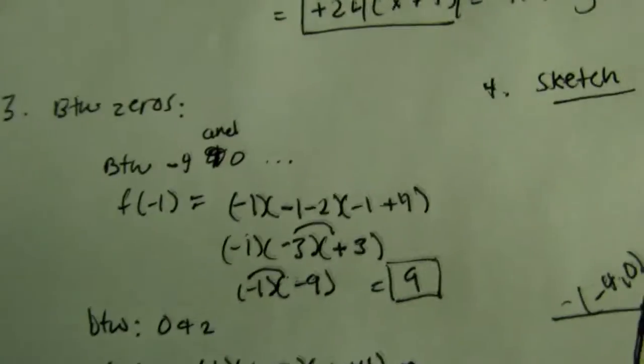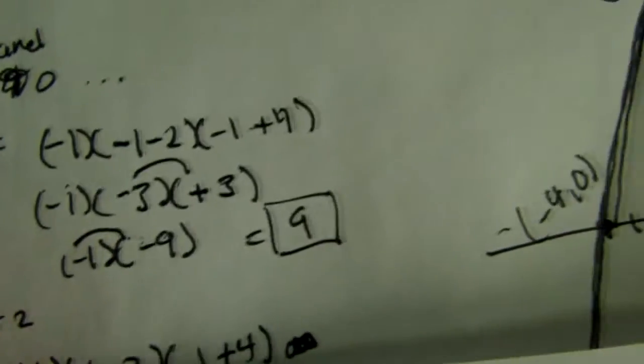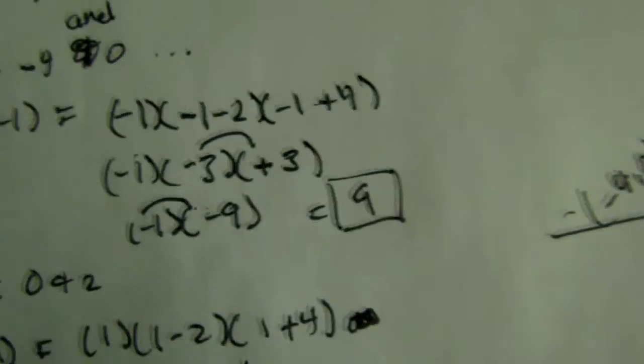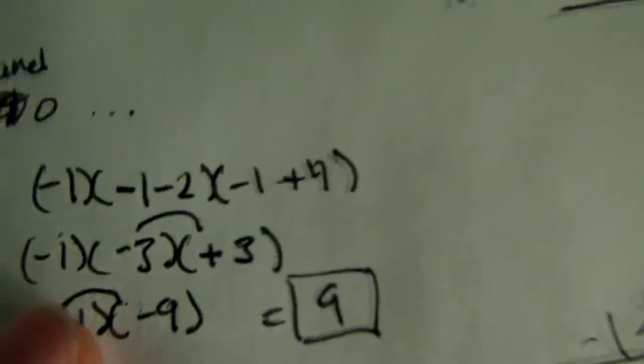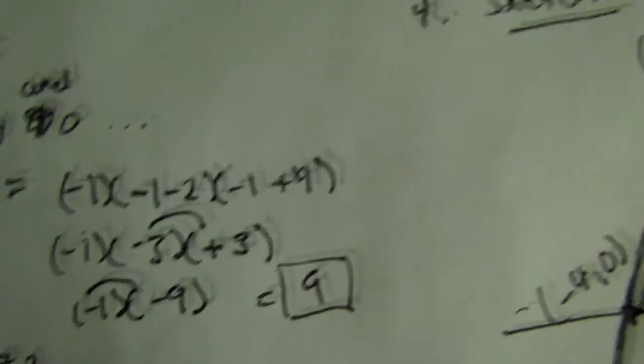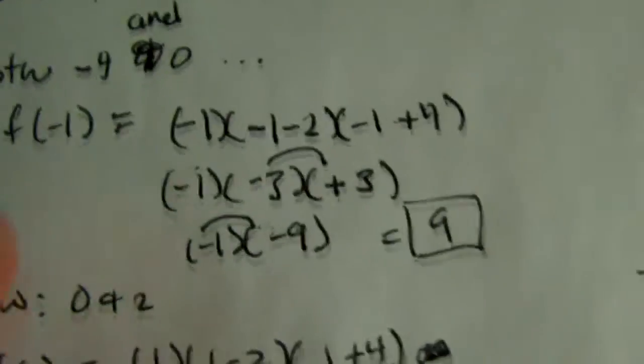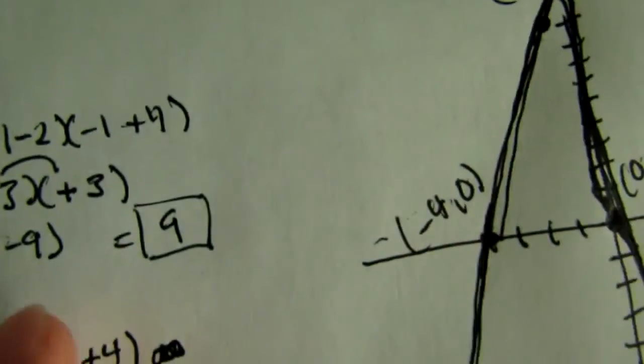Next, we want to find between the zeros. So, between our zeros. Well, remember, our zeros are 0, negative 4, and 2. So, between negative 4 and 0, just pick a number, like I did so. So, negative 1, and plug negative 1 in for each x.